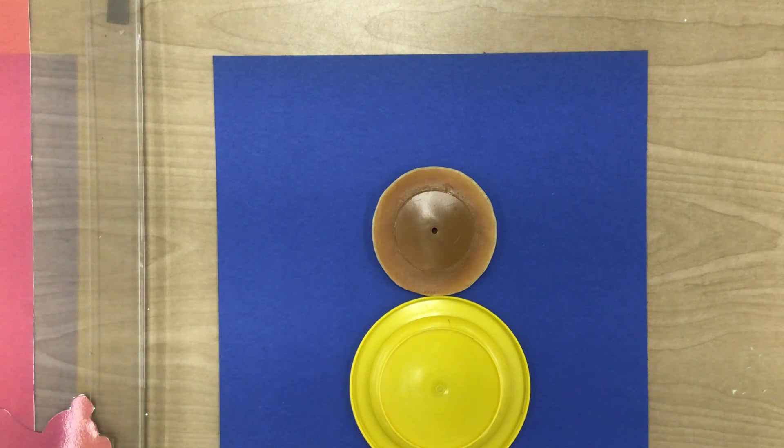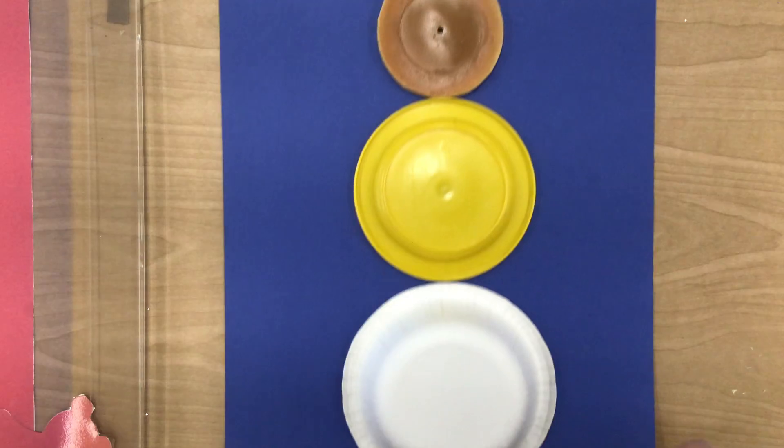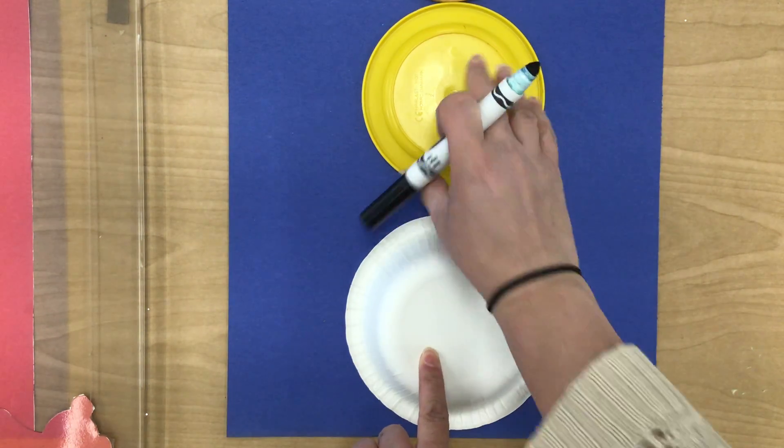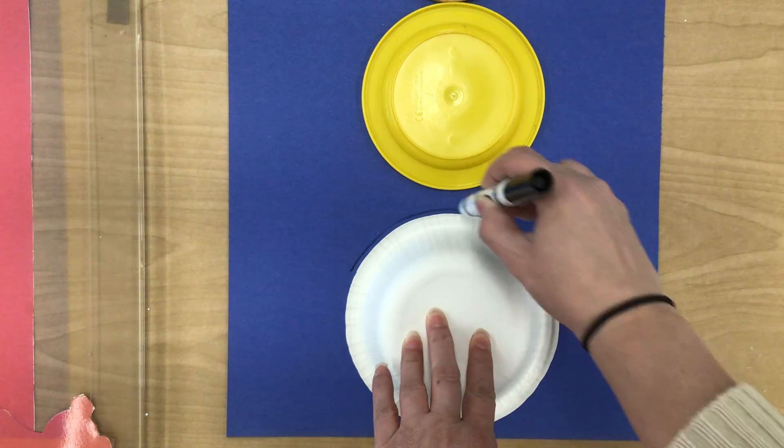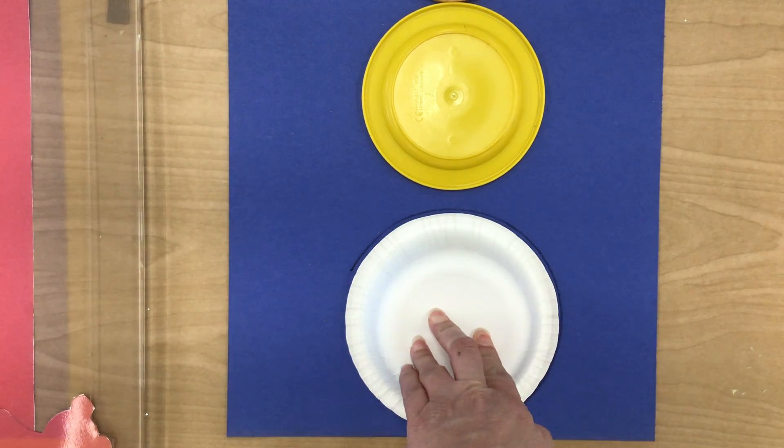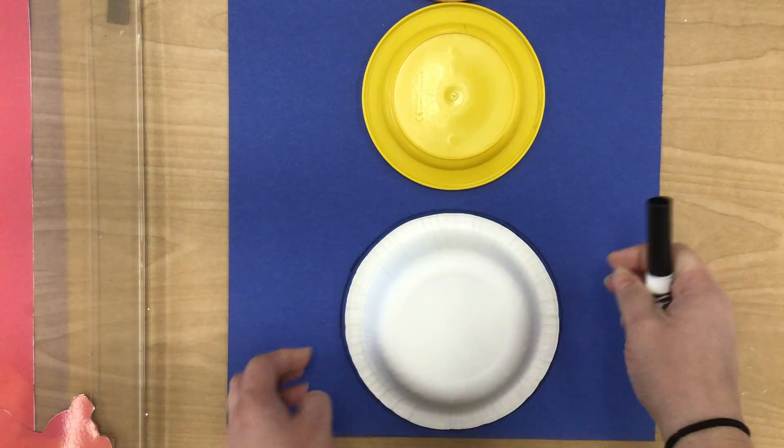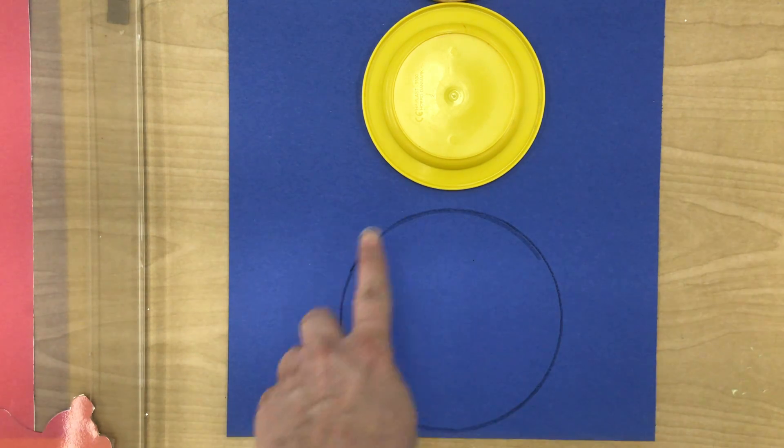So now that I have my paper and I have my three circles, a small, medium, and large, I'm going to start with a large one. And I'm going to use my marker and I'm going to trace around my circle thing. And then I can take that first one away. There's my first circle. It's the large one.